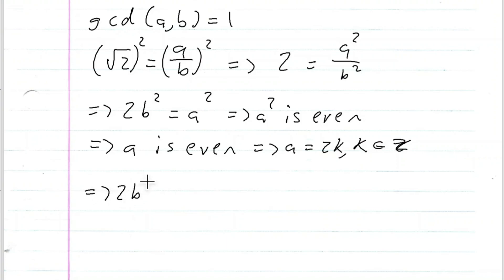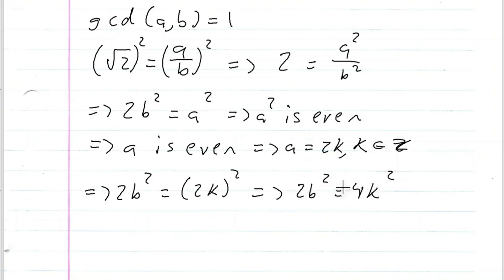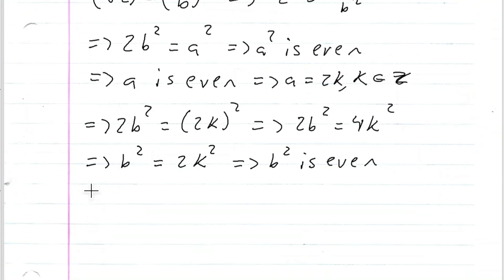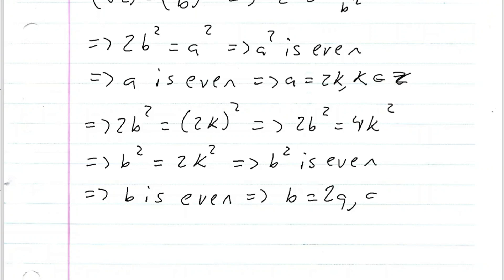Going back to the equation two B squared equals A squared, I'll substitute A with two K. So two B squared equals two K squared, which is four K squared. Dividing both sides by two gives B squared equals two K squared. So B squared equals two times an integer, which means B squared is even, and therefore B is even — meaning B equals two Q, where Q is some integer.